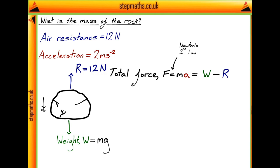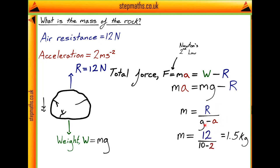We know that the weight of our rock is equal to the mass of the rock multiplied by g, so we can substitute that in and then rearrange for our mass m. Plugging in our values for air resistance and acceleration as well as the value of g which is told in the question as being 10 metres per second squared, we find that the mass is equal to 1.5 kilograms.